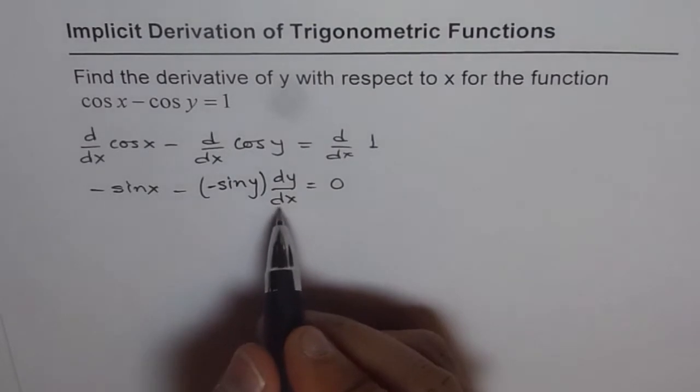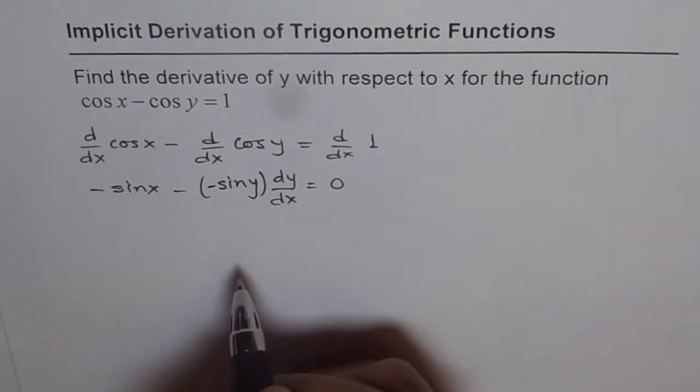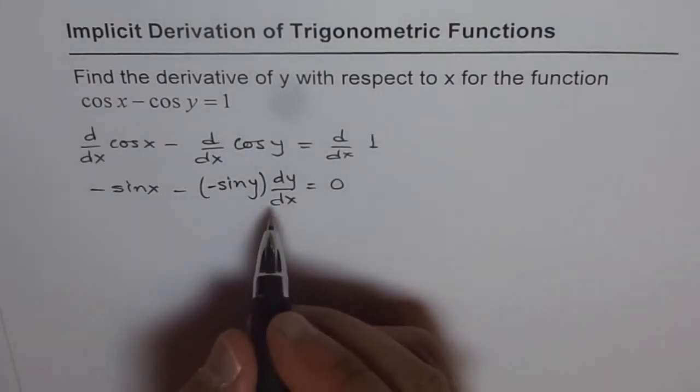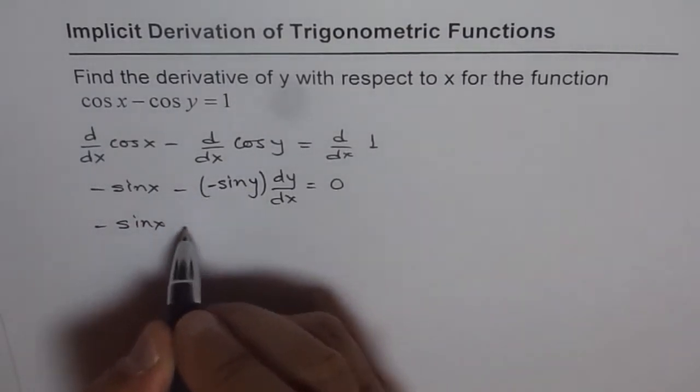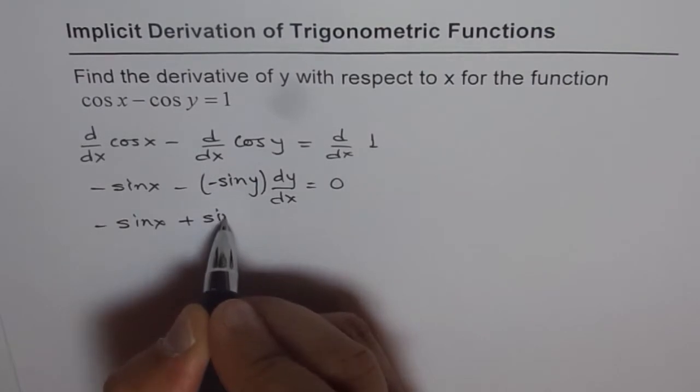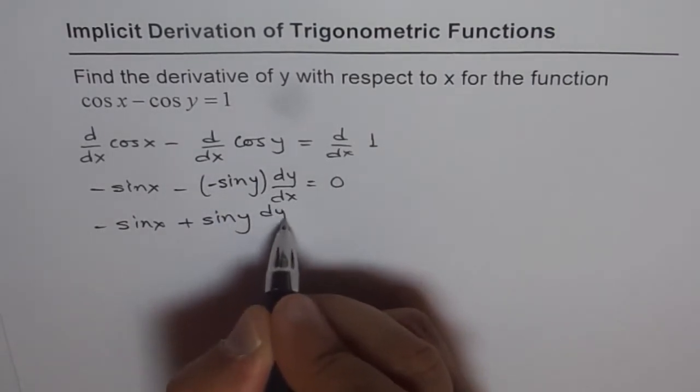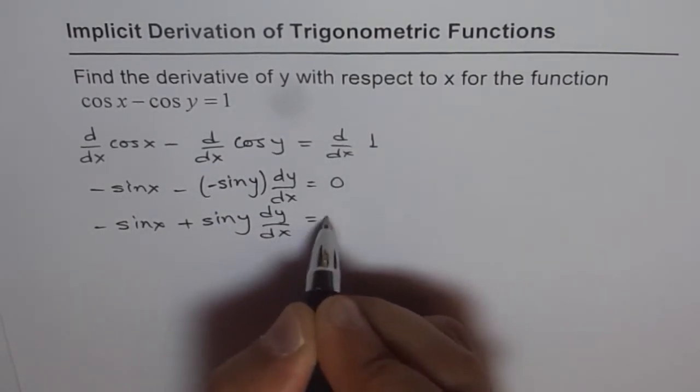Now, from here, we can isolate dy/dx and write down our answer. Let me first write this as minus sin x plus sin y dy/dx equals 0.